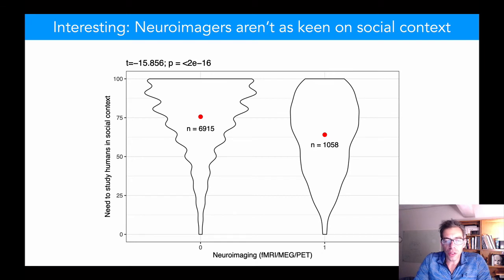Neuroimagers, of course, tend to study individuals doing individual tasks, but that's really a limitation of the method. But it just so happens that they think this is just fine. Social context is only moderately important according to them.